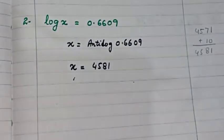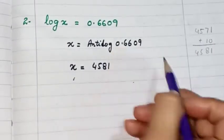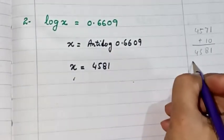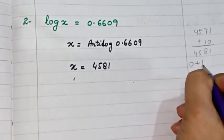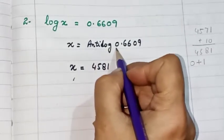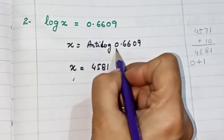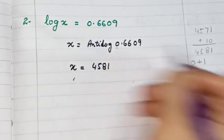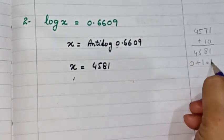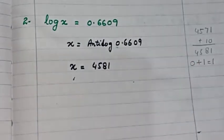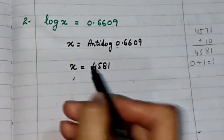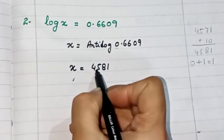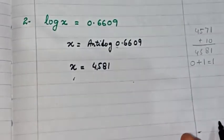But this is not the final answer; we have to account for the characteristic. The characteristic is 0, so we add 1, making it 1. We place the decimal after 1 digit from the left-hand side. So our answer is 4.581.